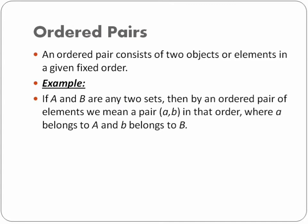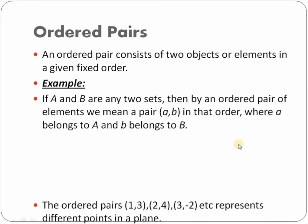I'm taking two sets here. If A and B are any two sets, then by an ordered pair of elements, we mean a pair (a, b), where a belongs to set A — this is called the first element, and the first element should come from the first set. And b belongs to set B, meaning the second element belongs to the second set.